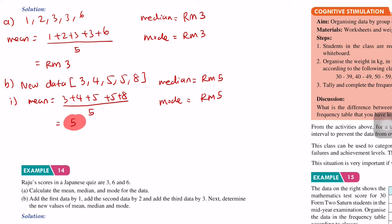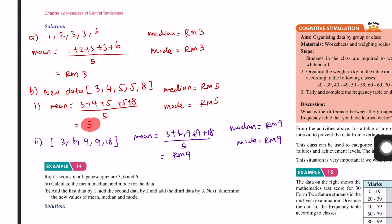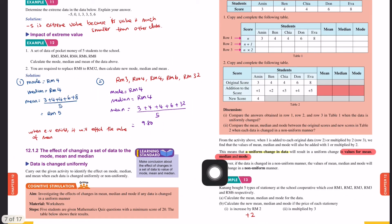If we multiply by 3, we get 3, 6, 9, 9, 18. The mean is 3 plus 6 plus 9 plus 9 plus 18 divided by 5, equals RM9. The median is RM9, and the mode is RM9. When we multiply the original data by 3, the changes to mean, median, and mode are also multiplied by 3. This demonstrates that a uniform change in data will result in a uniform change of values for mean, median, and mode.